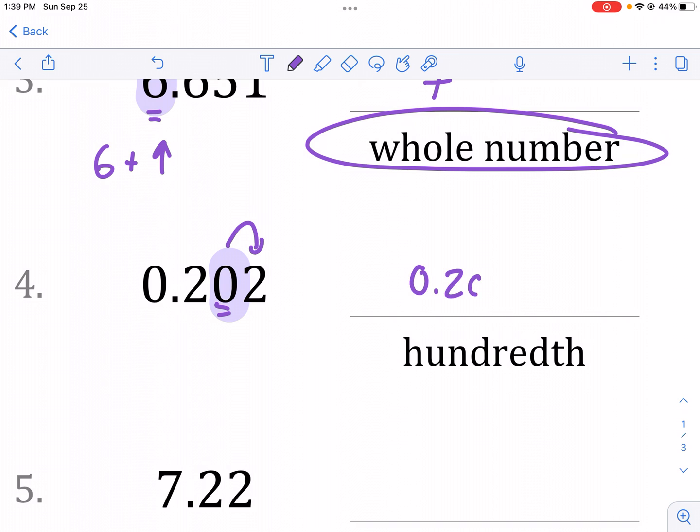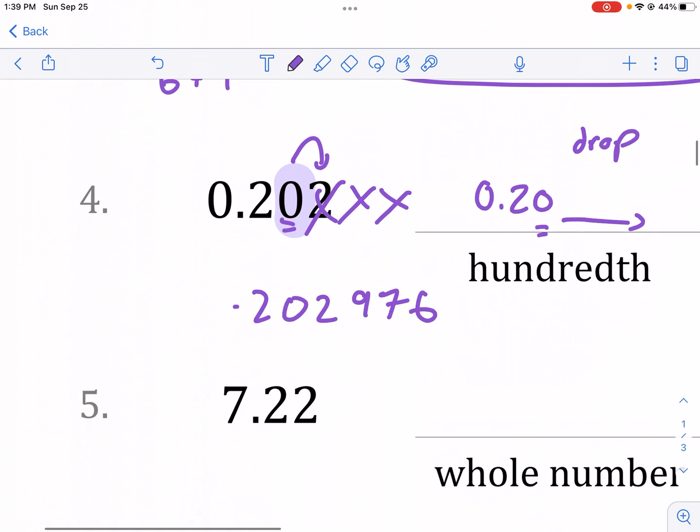0.20 and we drop anything. Rounding down essentially means we're going to drop anything to the right of our place. So, our place is hundredth. We're going to drop this two here. Any other numbers that we had, we would also drop. So, if it is 0.02976. Really big decimal there. But, again, if we're just rounding to the hundredth place, we only care about this two. We don't care about any of those other numbers. The two is not big enough.